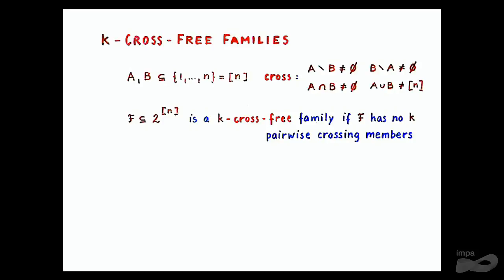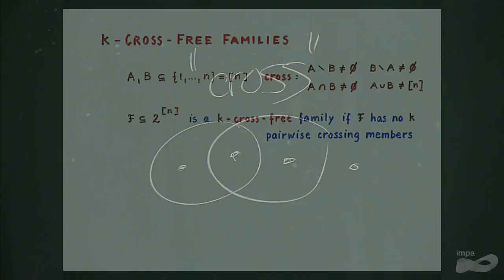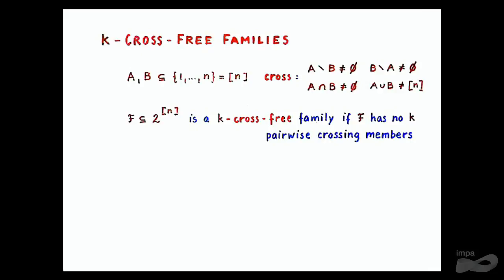The question was: if I have a family of subsets of an n-element set, then how large can this family be if it contains no K pairwise crossing members? Think of K as a fixed number.